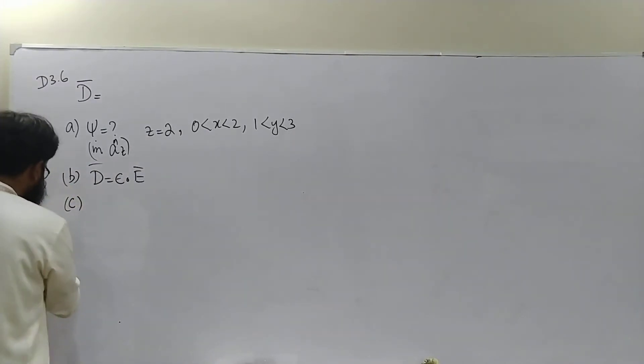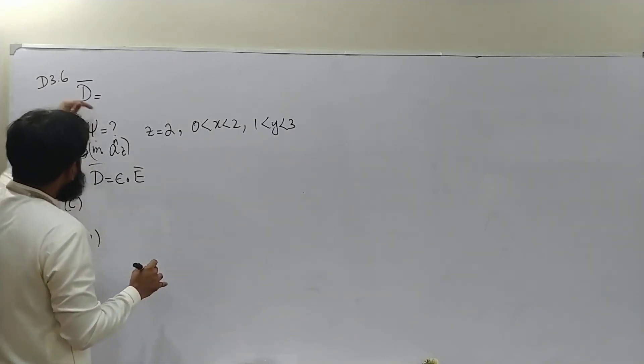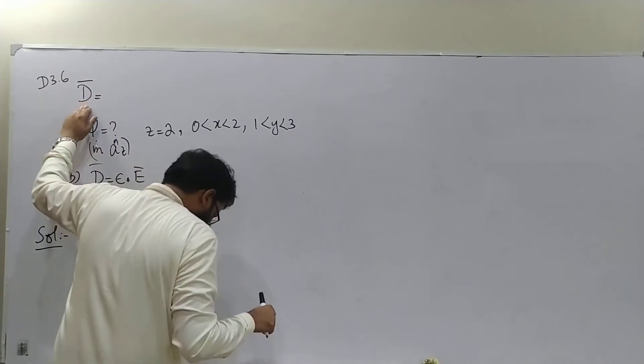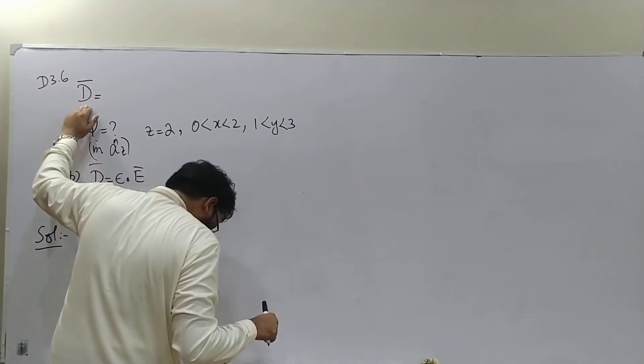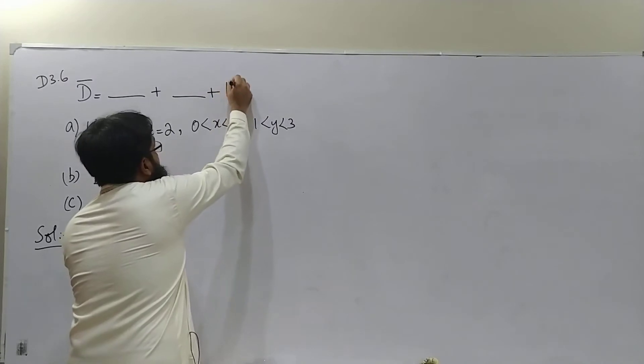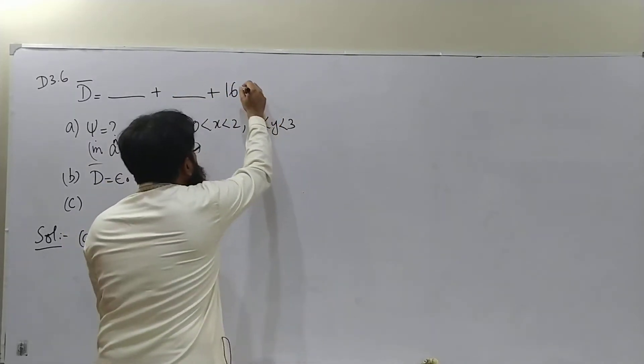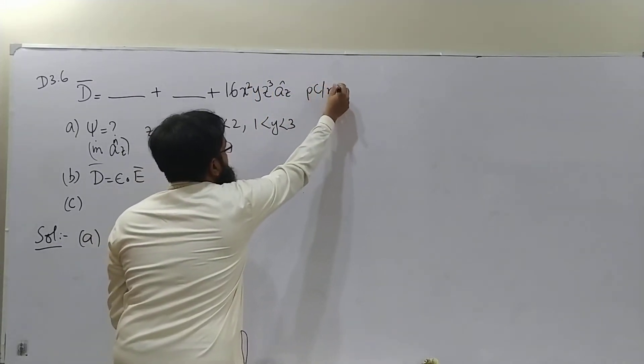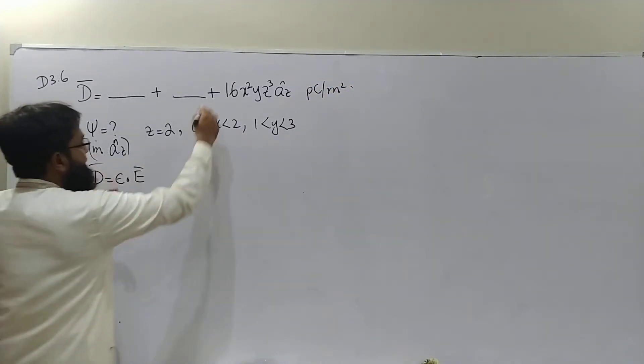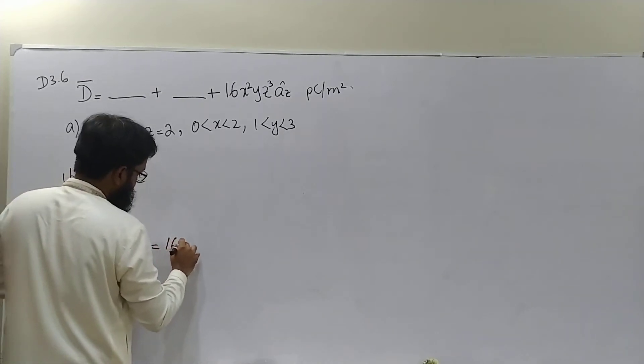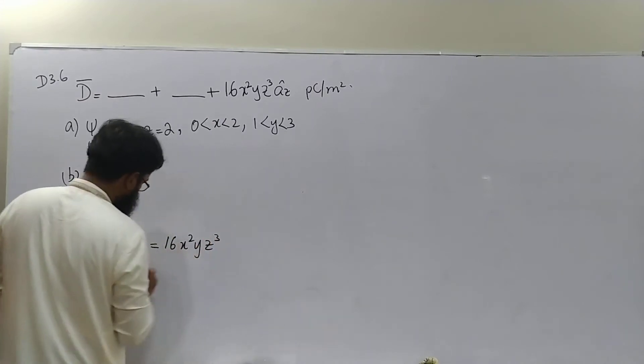So for Part A solution, we are not interested, because it says that it asks us to find flux in the direction of az. So instead of the whole flux density vector, we will be interested in that component which is in the direction of Z. Whatever the value of X and Y component, we are not interested. 16 X square Y Z cube. So we are interested in this component only, so DZ only magnitude, if we take 16 X square Y Z cube.